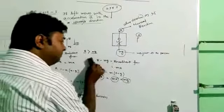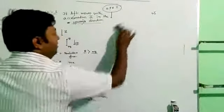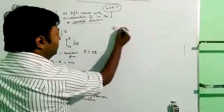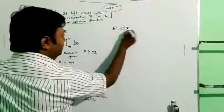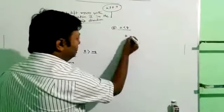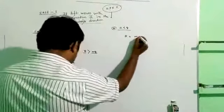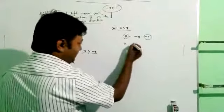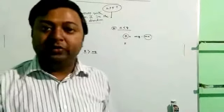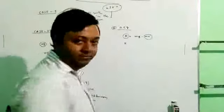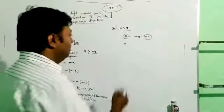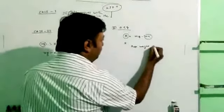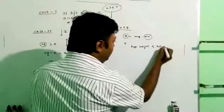If A is less than G, then R equals Mg minus Ma. That means R decreases, and you feel your apparent weight decreases by an amount Ma. Your apparent weight will be less than your actual weight.